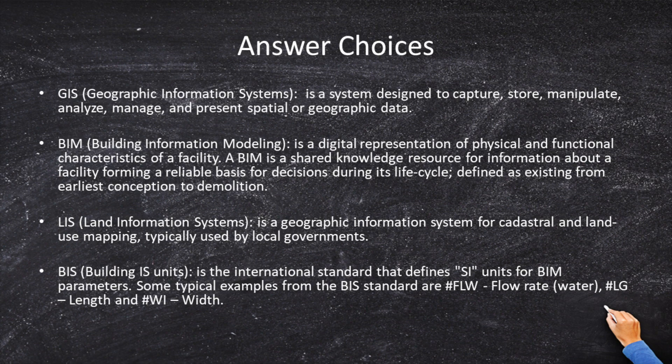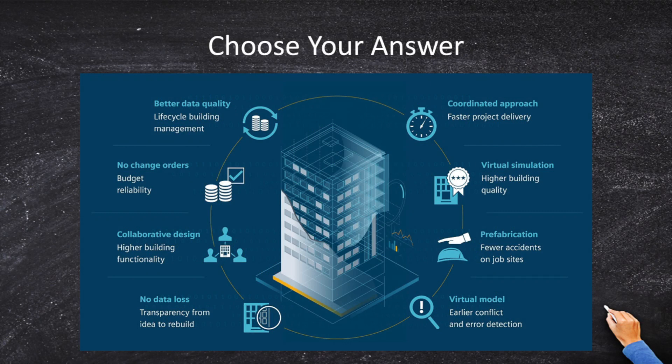Right now I've narrowed it down to two answer choices: GIS, which sounds like an okay answer, and BIM, which is specific to the building modeling framework. I'm going to choose BIM because that is the best answer available. BIM and BIS are tested on the FS exam, and GIS and LIS are tested on the FS exam as well. So before you close this video, make sure you can recite the definitions for all four of our possible answer choices.